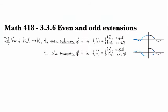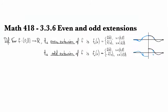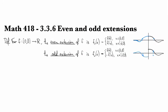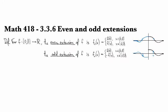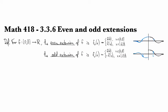Okay, so given an F, we can construct an FE and an FO, such that the FE and the FO are even and odd functions, respectively.